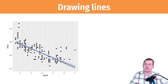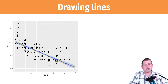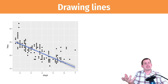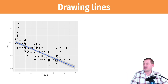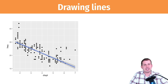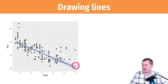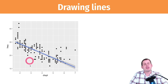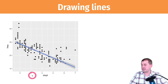Here we have car displacement again and highway miles per gallon. You can see that as displacement goes up — displacement means engine weight — the heavier the car is, the worse mileage it gets, which makes sense. If you look at this line, you can see that it's going down. This line is also known as the best-fit line.